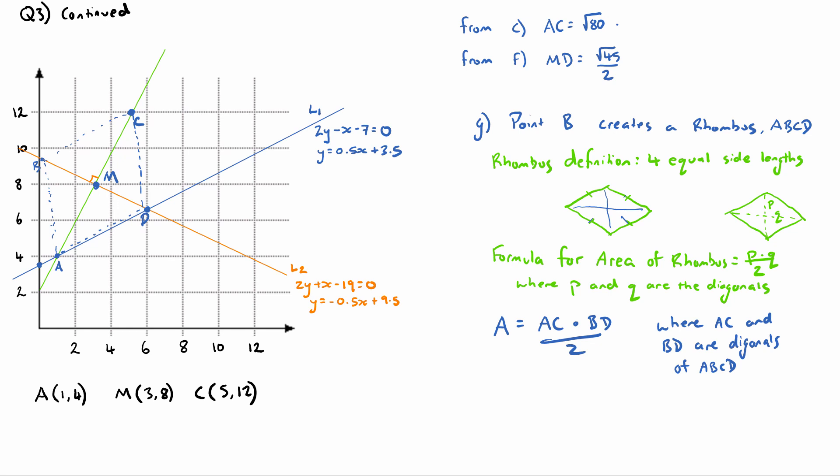Now if this distance is √45/2 and this is a rhombus, that means the whole distance BD will be twice this. So √45/2 multiplied by 2, which is just √45.